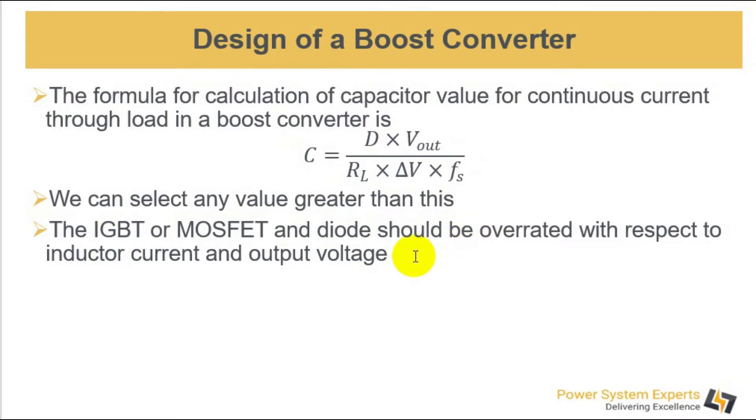The IGBT or MOSFET and diode must be overrated according to the inductor current. For example, if the inductor current is 1 ampere, your IGBT or MOSFET must be greater than 1 ampere. The current rating and the voltage rating should be greater than the output voltage.